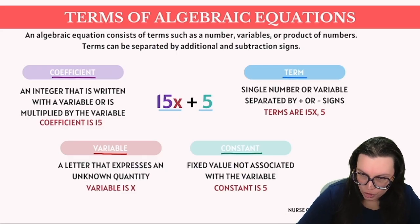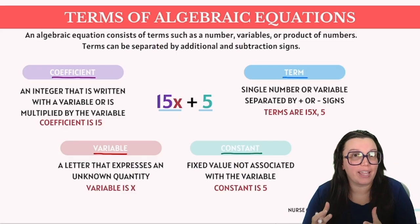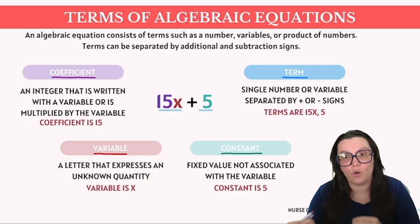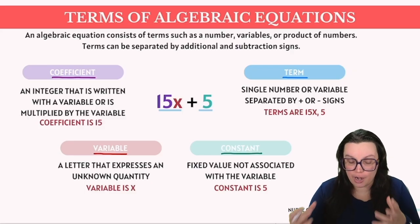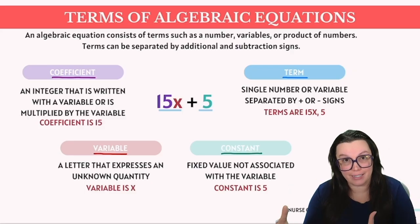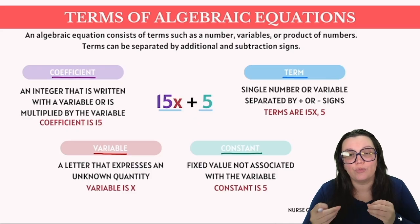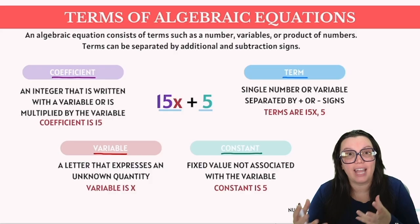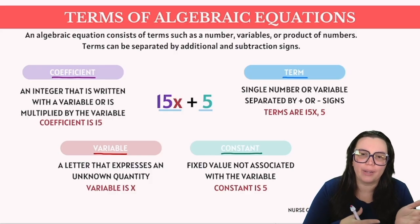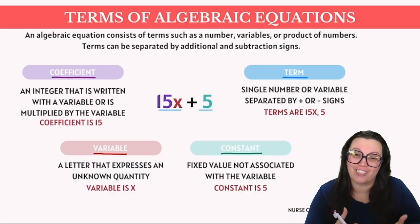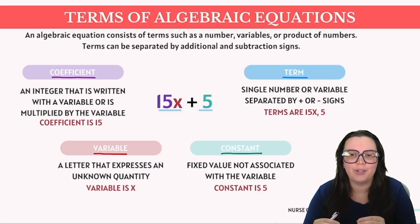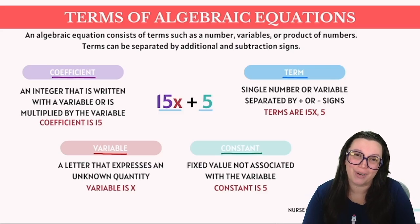Finally let's talk about terms. In an algebraic expression, a term refers to a component that is delineated by addition or subtraction symbols. In our expression, 15x and 5 each represent distinct terms. Terms are the building blocks of an algebraic expression, excluding the operators — that is our addition and subtraction themselves. Although the concept of terms might not be the primary focus, it's crucial to understand because it underpins the structure of algebraic expressions.